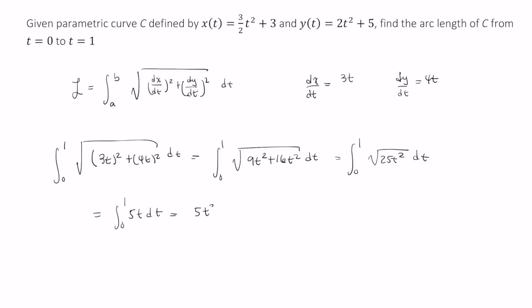So we end up with 5t squared over 2 evaluated from 0 to 1, giving us an arc length of 5 halves.